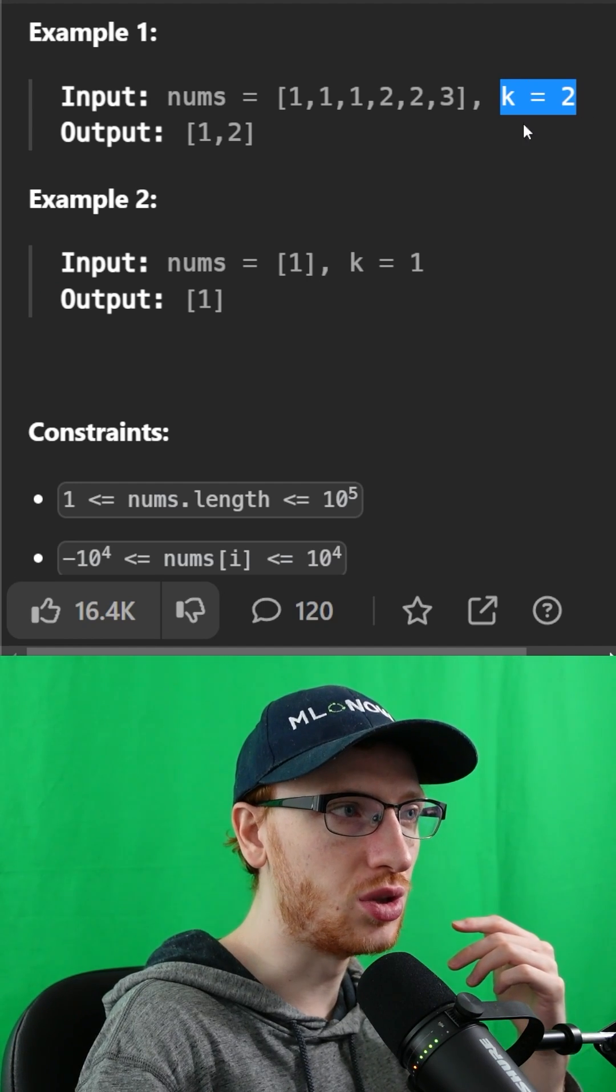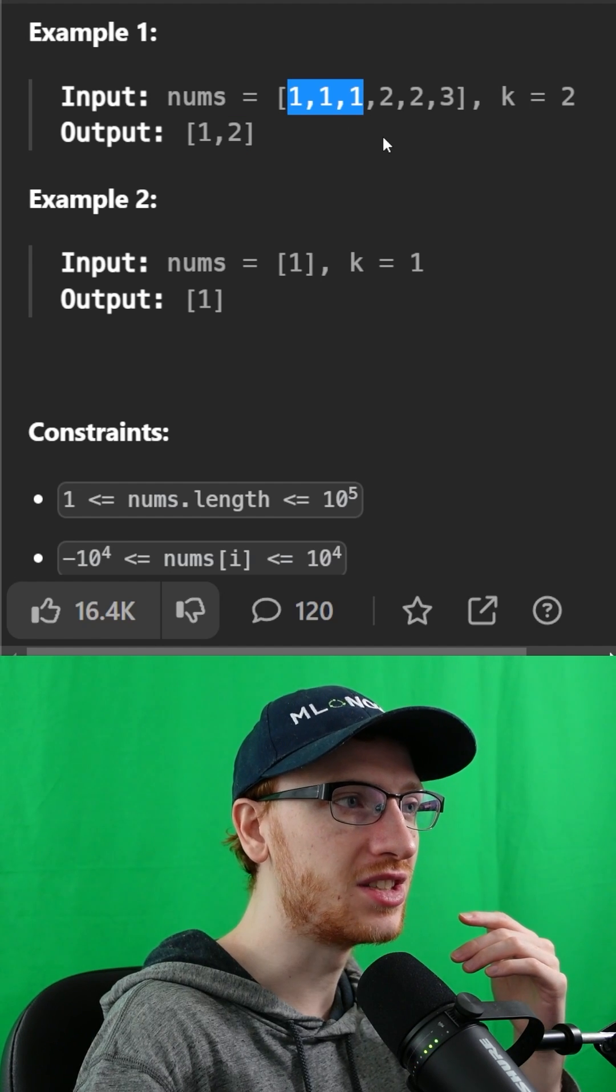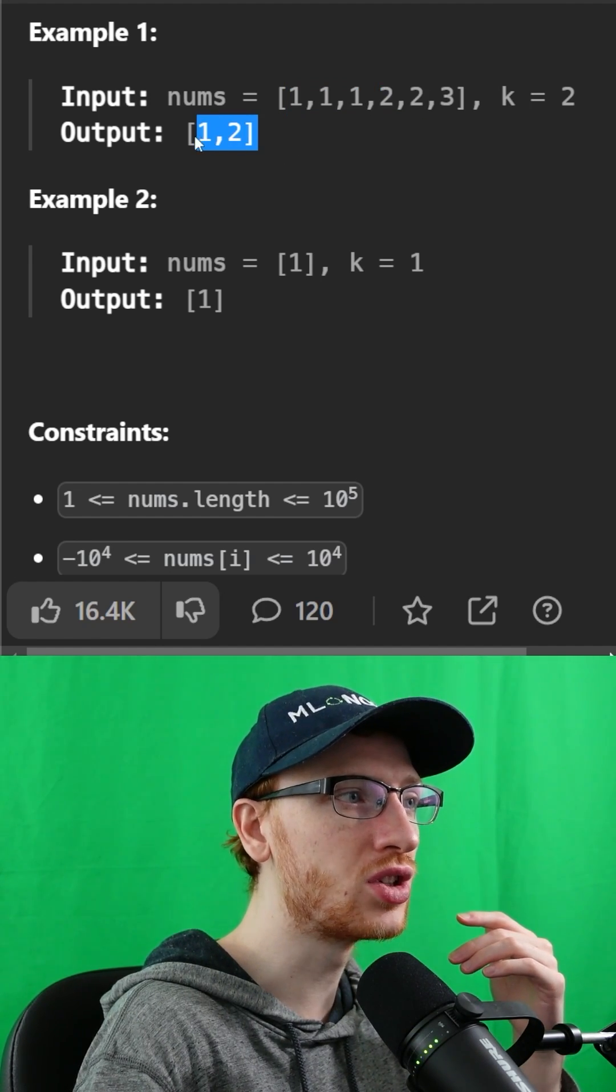So if we had k equals 2 and the numbers 1, 1, 1, 2, 2, and 3, well the top occurring is 1, the second most is 2, so we return 1, 2.